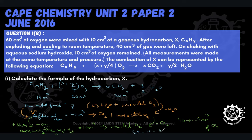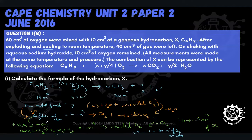Because we started with 60 cm³ of oxygen and in the end we had 10 cm³ of unreacted oxygen left over, it follows that 50 cm³ of oxygen was what actually reacted. So we replace the 60 with 50 — the actual amount that reacted. We have to use all of this information to come up with our reacting volumes and product volumes, so we can find the formula of the hydrocarbon.